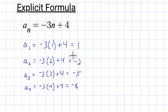Alright, so let's go ahead and write the first four terms in order. The first term is 1. The second term is negative 2. The third term is negative 5. And the fourth term is negative 8. And that pattern would continue.